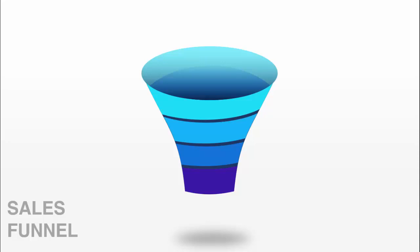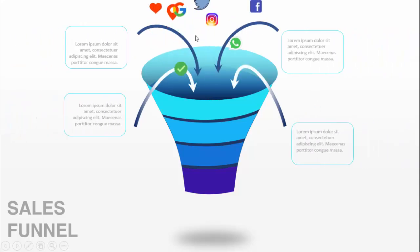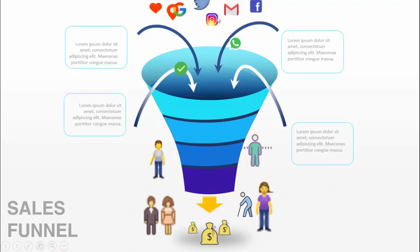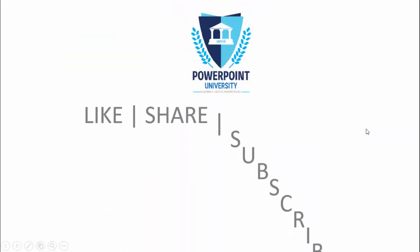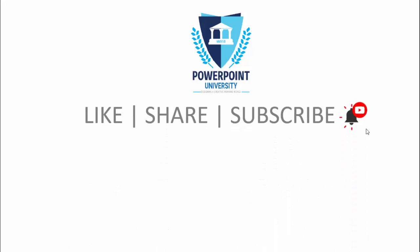In today's tutorial I'm going to show you how to create a sales funnel design that can be used for social media. I've created a 3D-style funnel design — when you click, an arrow comes in, social media icons go inside, and the output is money or revenue coming out. You can add different people icons and detailed text.